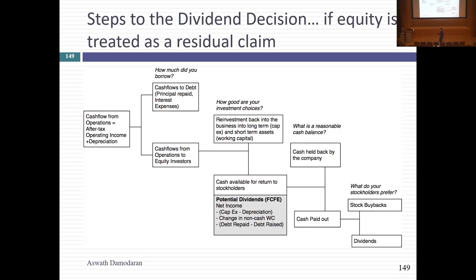To get the process started, let's think about how in a rational world we would set dividends. Dividends — cash you take out of the business — should be the last step in the process, not the first. You start with how much cash you get from operations, bring in borrowed money if applicable, get to cash flows to equity, decide how much to reinvest, and whatever is left over is what you take out. Dividends should be a residual cash flow — the cash left in the till at the end of the year.